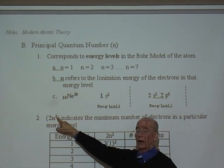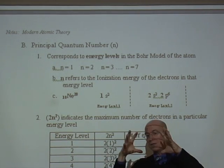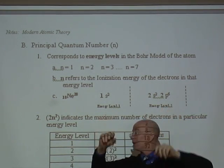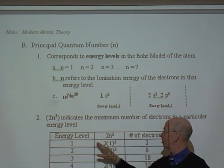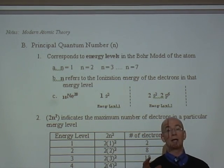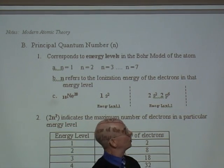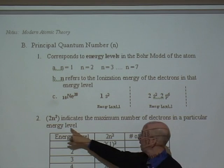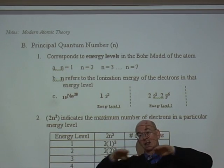The formula 2n² indicates the maximum number of electrons in a particular energy level — not in the atom, but in that energy level. For row one, which includes hydrogen and helium, you put N equals 1: two times one squared equals two, meaning it can only hold two electrons. For row two — lithium, beryllium, boron, carbon, nitrogen, oxygen, and neon — N equals 2: two squared is four, times two is eight. So row two on the periodic table can hold up to eight electrons.